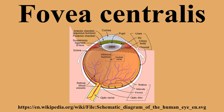Approximately half of the nerve fibers in the optic nerve carry information from the fovea, while the remaining half carry information from the rest of the retina. The para-fovea extends to a radius of 1.25 mm from the central fovea, and the peri-fovea is found at a 2.75 mm radius from the fovea centralis structure.